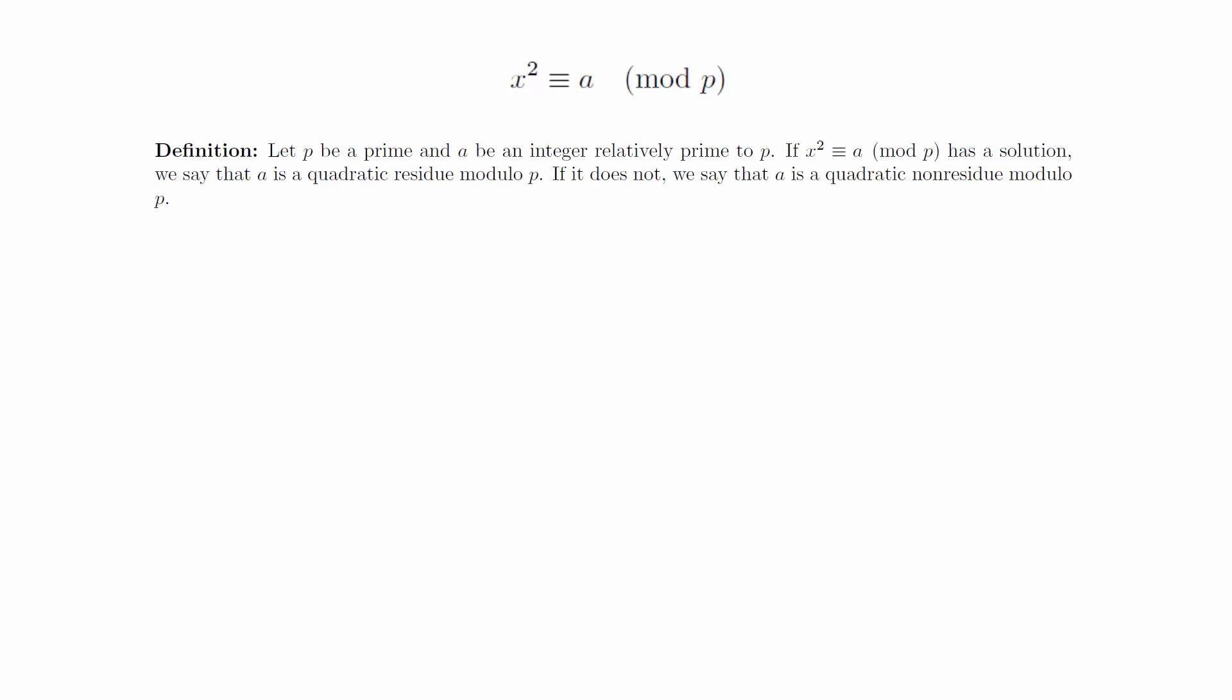Let p be a prime and a be an integer that is relatively prime to p. If x squared congruent to a modulo p has a solution, we say that a is a quadratic residue modulo p. If it does not, we say that a is a quadratic non-residue modulo p.